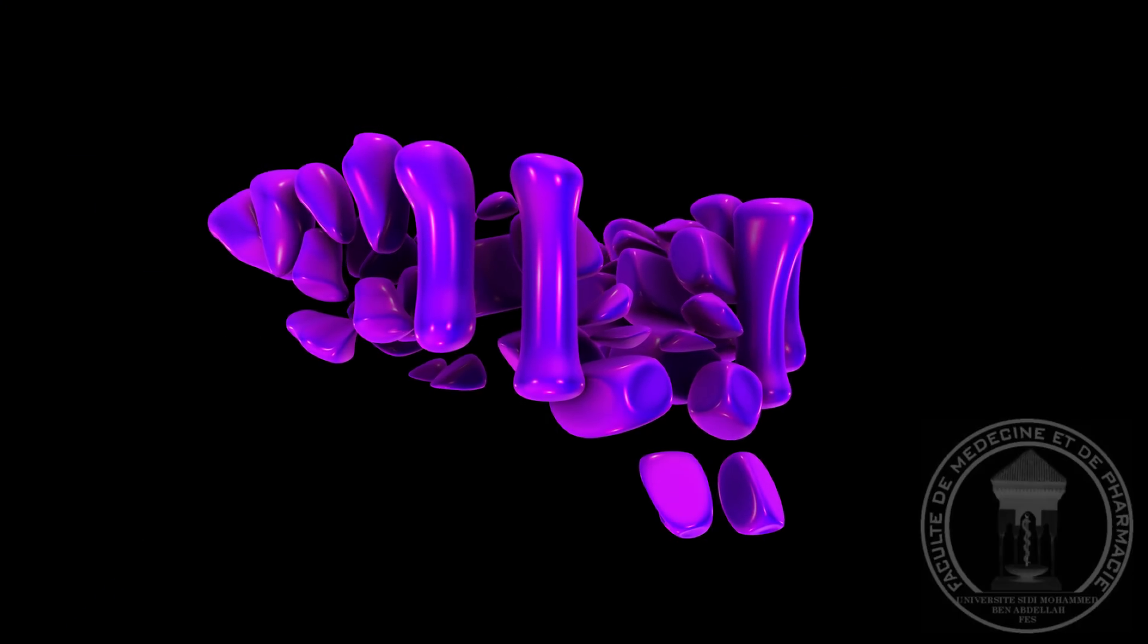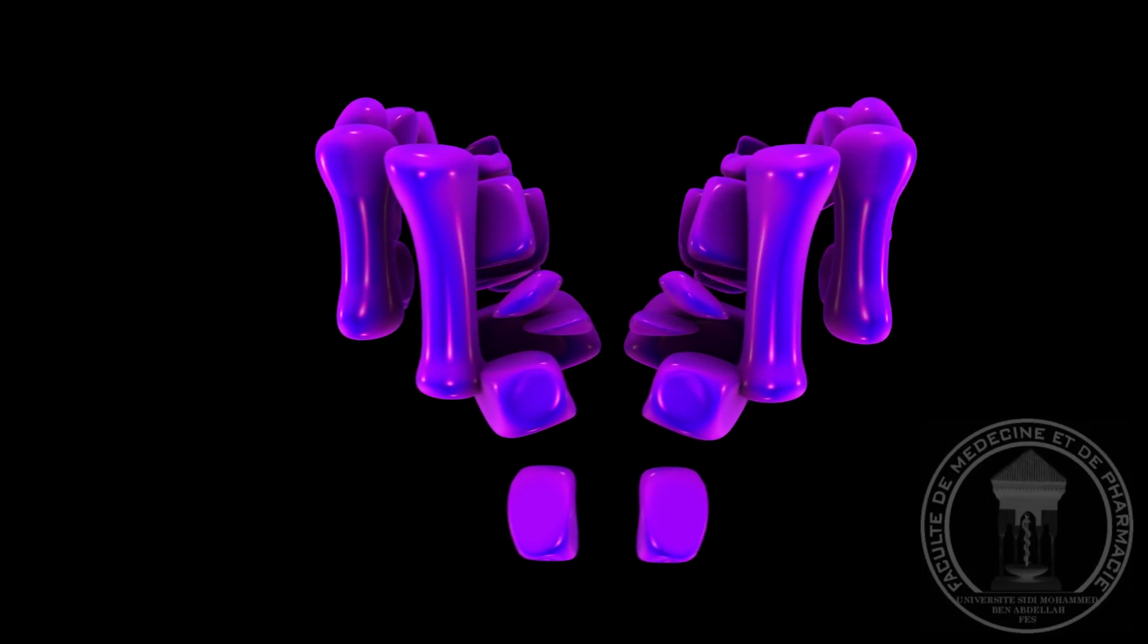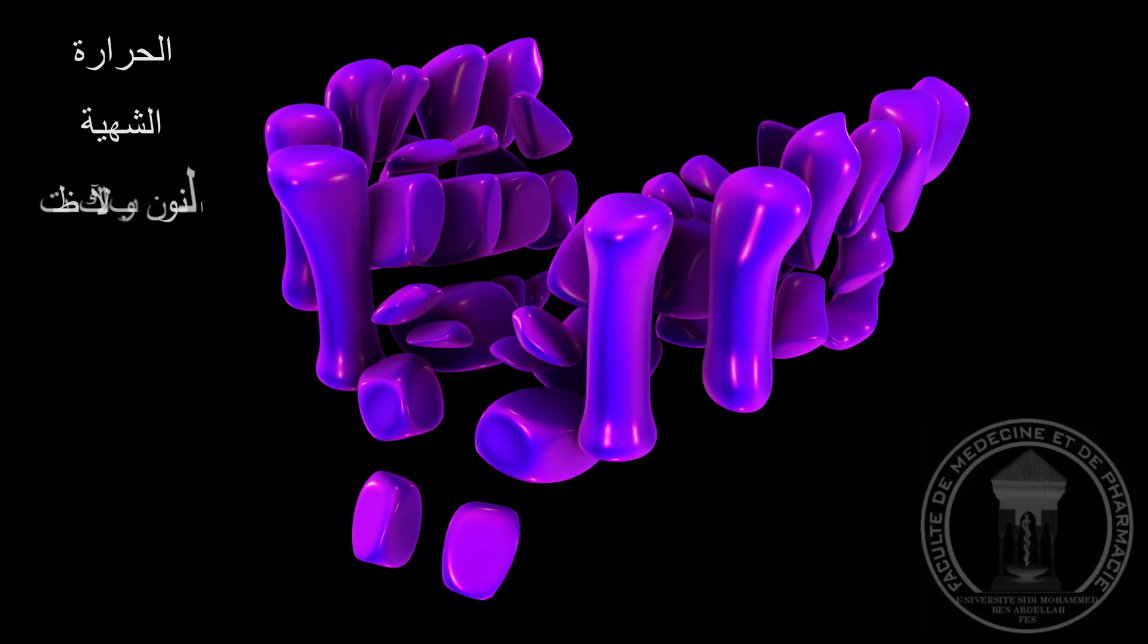يحتوي الوطاء على عدة نواة مختلفة تساهم في العديد من الوظائف بما في ذلك تنظيم الحرارة، الشهية، وتنظيم دورة النوم واليقظة كما أنه يلعب دورا أساسيا في الجهاز العصبي اللاإرادي